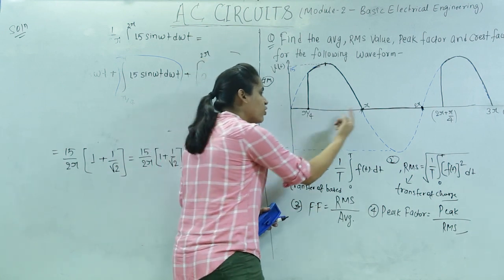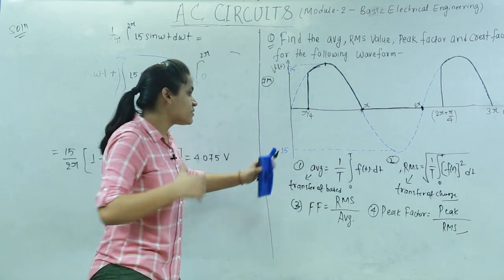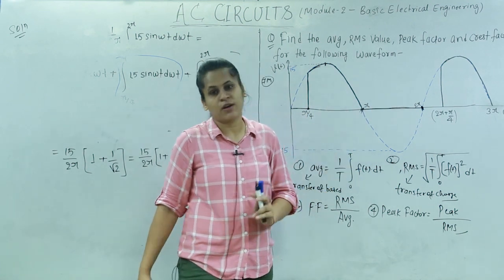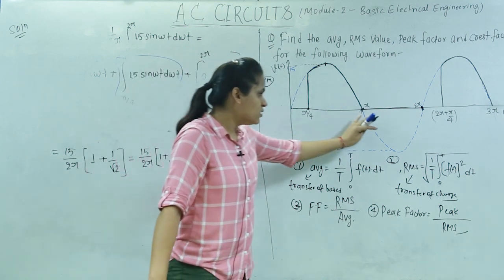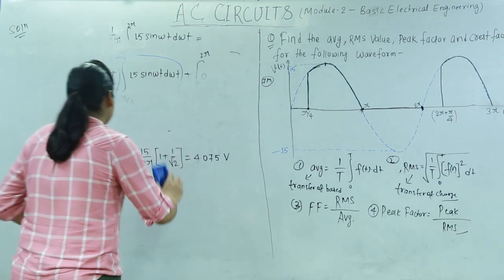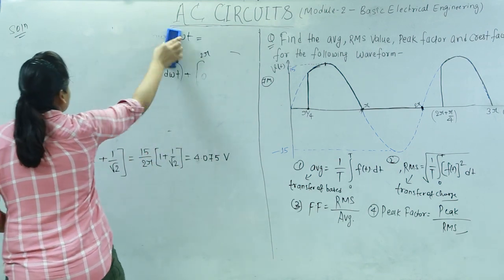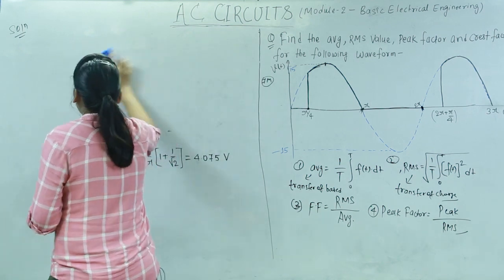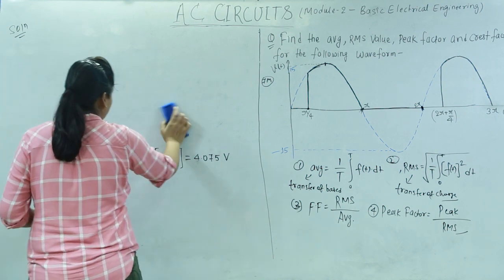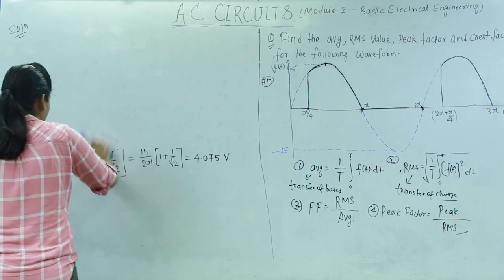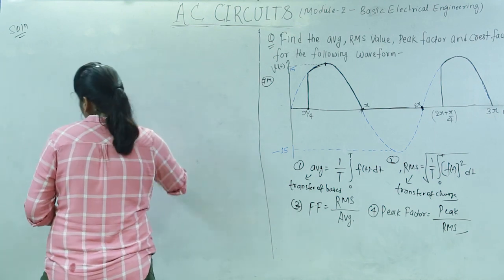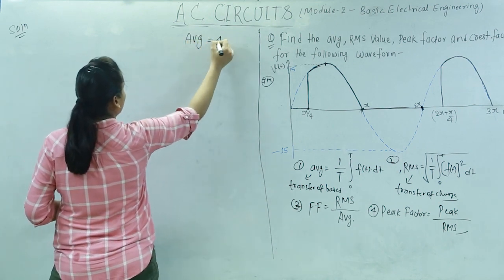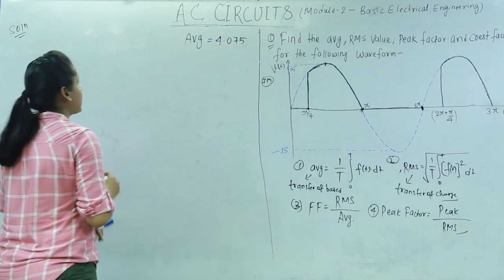The limit can change but these kinds of problems can always be asked in your semester examination, because sinusoidal is the favorite waveform. Sinusoidal is important for the examination too — they ask sinusoidal all the time. Average value is equal to 4.075 volts. Now let us calculate the RMS value.